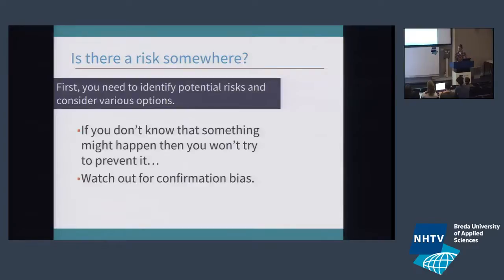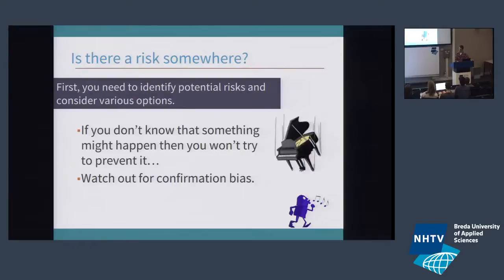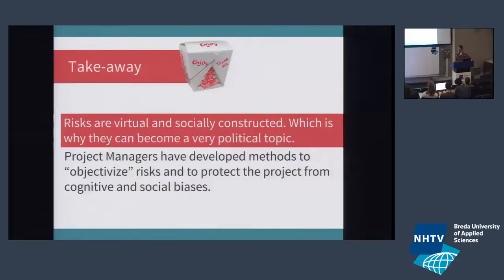The first step is to identify risks. You need to watch out for confirmation bias. If you think something might happen, if you are afraid something might happen, you might see reasons everywhere that it is actually happening — this might not necessarily be the case. It's like if you buy a Volvo, you're going to see Volvos everywhere. The main takeaway is that these risks don't really exist; they are virtual, socially constructed, and it is our role to objectivize them.